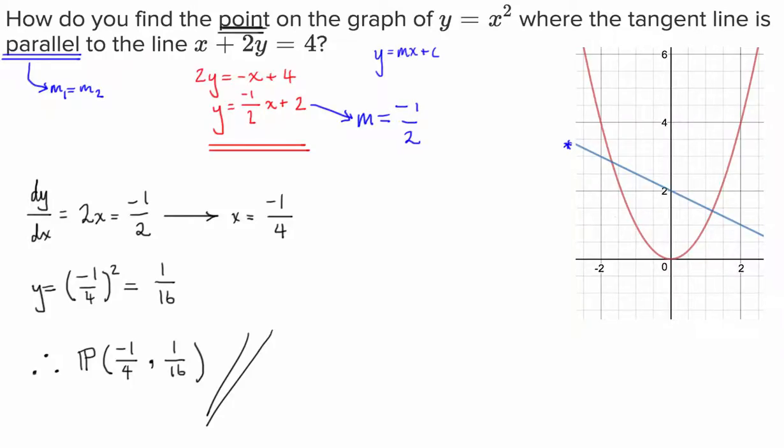Then what we have to do is once we've found the gradient of our linear function, we have to figure out what point on our quadratic will have a gradient of negative 1 half. The way we do that is we differentiate our quadratic equation. And we solve for x when the derivative is equal to negative 1 half. We found that that was equal to negative 1 quarter.